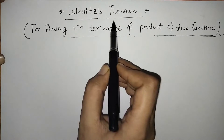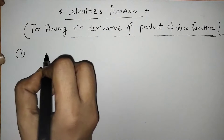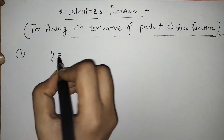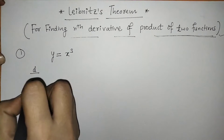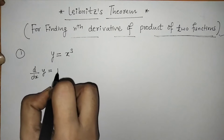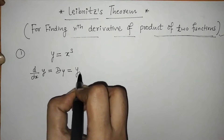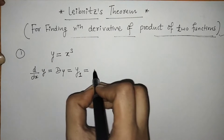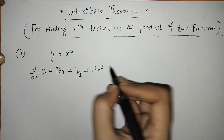To understand this theorem, first we should note down some points. If we have function y equal to x cubed and we differentiate y with respect to x, we get the first derivative. We denote this as y1, and here we get the first derivative of x cubed, which is 3x squared.